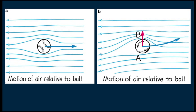Bernoulli doesn't treat friction or viscosity, which do play a role in the spinning baseball. If you study this further, you'll learn about the Magnus effect.